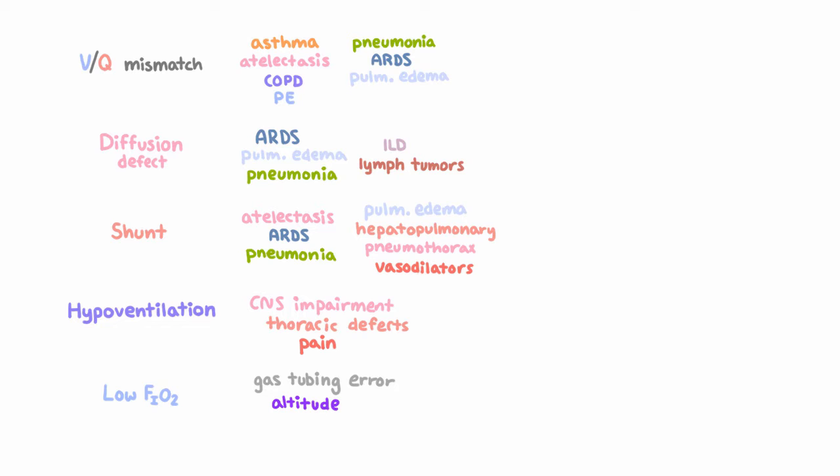So this is a very long list, and to help you narrow it down, a couple of things that you can focus on in the history are the onset, which is usually very rapid with something like a PE or a pneumothorax, signs and symptoms that would suggest sepsis and the development of ARDS, any reasons for alteration in mental status like recent sedation, surgery, or stroke, and then of course underlying diseases.